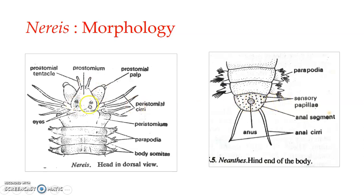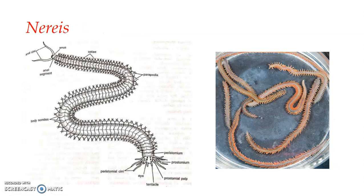To summarize: the head region is formed by the peristomium, prostomium, and associated appendages. The pygidium, or anal segment, bears the anus, a pair of anal cirri on the ventral side, and many sensory papillae, with parapodia absent. The trunk segment ranges from 80 to almost 200 similar segments, with the number being species-specific. Each trunk segment bears a pair of lateral parapodia. We will be looking into the head morphology and the structure of parapodia in the next video.